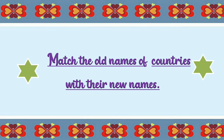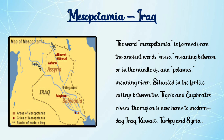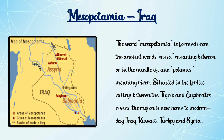Match the old name of countries with their new names. Here we see Mesopotamia. Mesopotamia is the old name of Iraq. M-E-S-O-P-O-T-A-M-I-A. Mesopotamia is now Iraq.